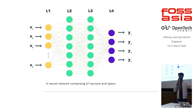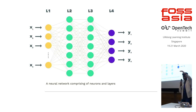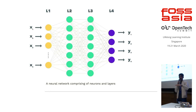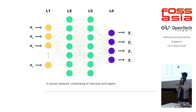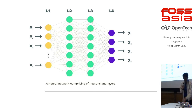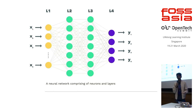If you give it a picture of a car, out of apple, orange, car, and bus, it would fire the specific neuron saying yes, this is a car. X to Y mapping — that's ultimately what a neural network is.